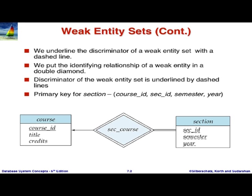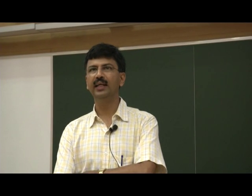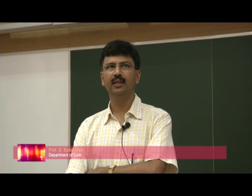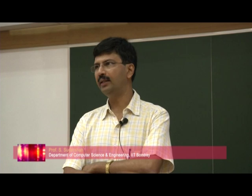I showed this notation where the diamond relationship linking section and course was shown with a double diamond. What does this mean? The point here is that section has to be associated with the course, so I have to have a relationship. But I also said that every entity must have a primary key. Now what is the primary key of the section? How is the section uniquely identified? One option is to create a fake ID - I can just create an integer ID and each section has some unique ID.